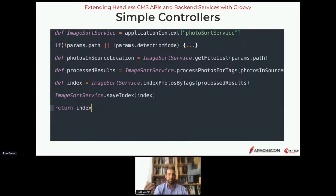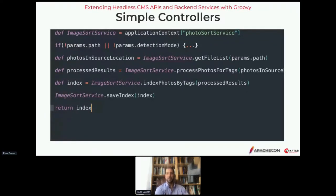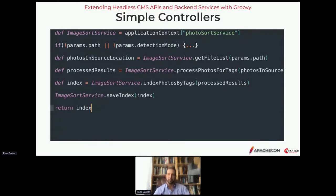Looking at the code: if you put a Groovy script in a special folder in Crafter, it automatically becomes a REST API — it's really easy to create REST APIs and specify how they take up URL space. The code is also simple: at the top we're picking up a Spring bean, then checking some parameters for precondition checking, then using that service and passing in parameters. At the end we take whatever we get back as a result and return it — Crafter automatically marshals that object as JSON. I have complete control over the shape of the incoming request and the output.